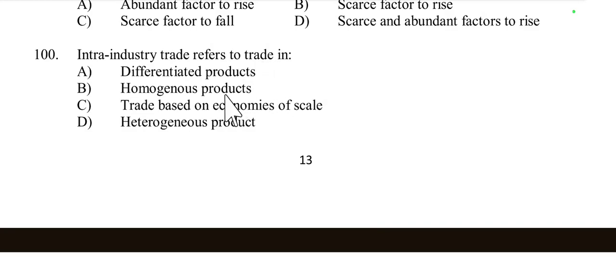Question 100: Intra-industry trade refers to trade in differentiated products. Intra-industry trade refers to trade between countries involving the exchange of similar but differentiated products within the same industry — such as different models of cars or types of electronics. This contrasts with inter-industry trade, where countries exchange entirely different types of products. Option A is correct.